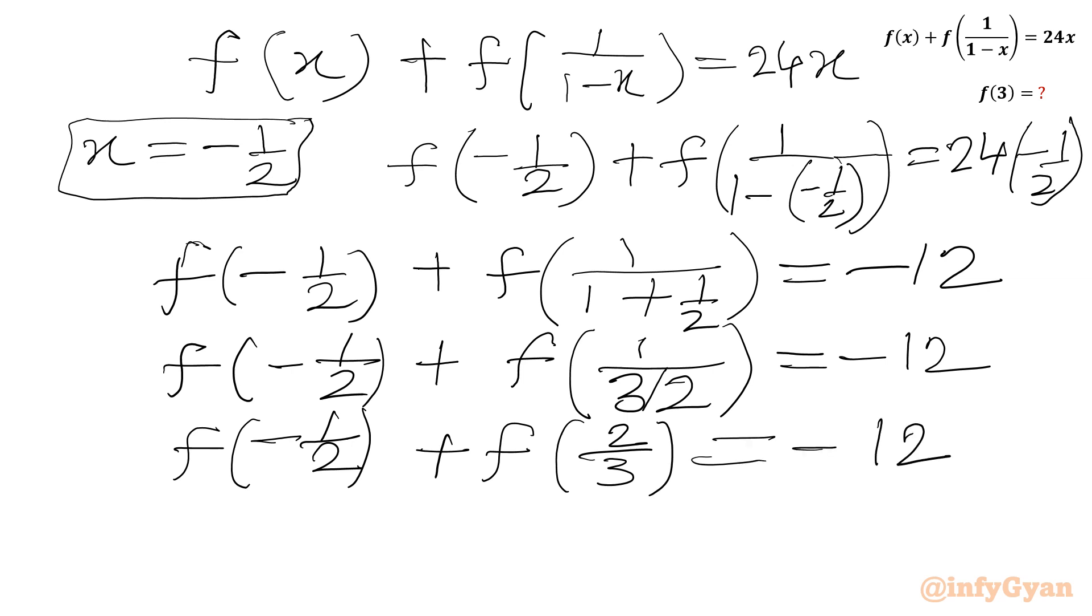Now I will multiply both sides with negative 1. So let us multiply with negative 1. In RHS also, we will multiply with negative 1. So we will get -f(-1/2) - f(2/3) = 12. And this equation we will call equation number 2.